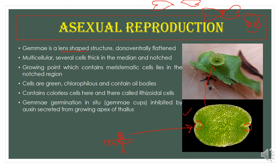Scientists have found that Gemmae cannot germinate inside the receptacle — germination is inhibited by auxin secreted by the growing apex of the thallus. For germination of Gemmae, water or rain water is very essential because the Gemma must move away from the parent thallus. Since Gemmae grow very close to the mid-rib and apical region, the auxin secreted by the apex can easily diffuse and inhibit their germination.